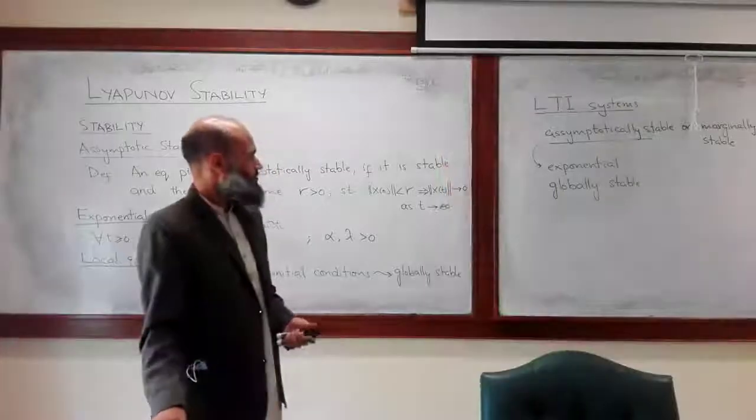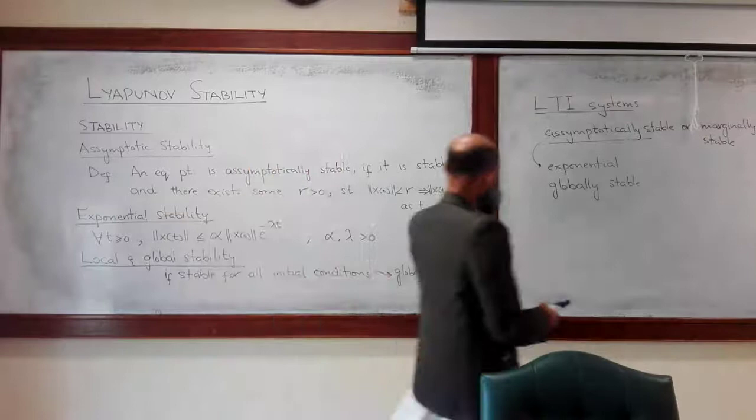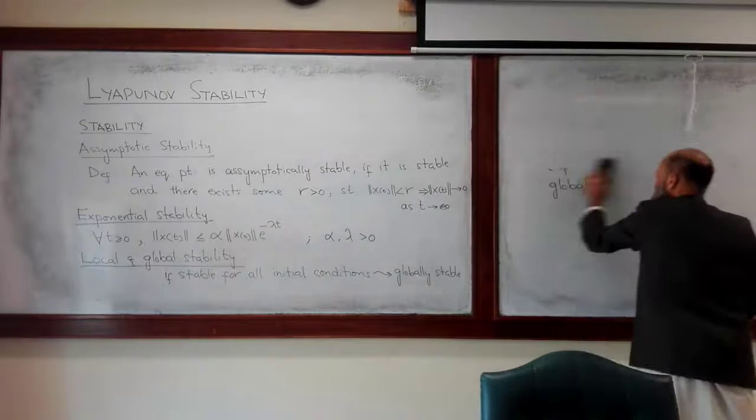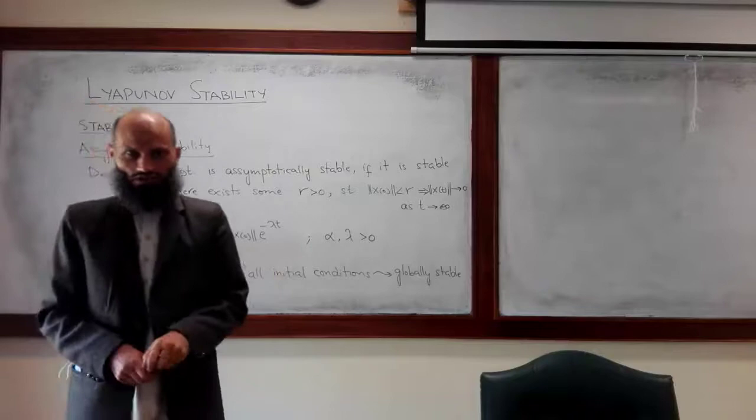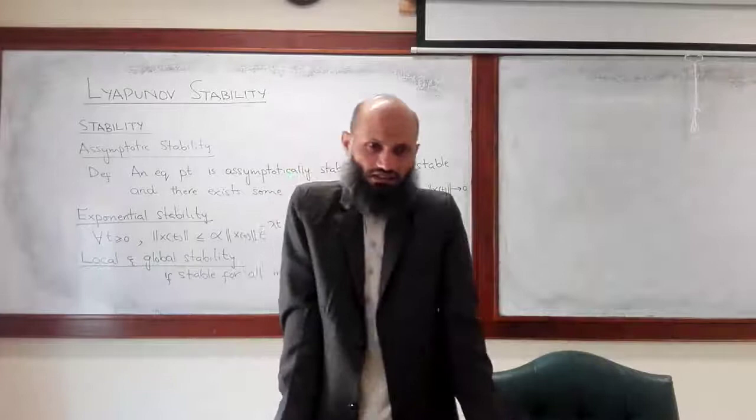These were basic definitions and now we study some techniques to determine the stability. The idea was simple: if along the trajectories — trajectories are paths of the system as a function of time — if the energy of the system is decreasing, it will finally converge to the equilibrium point.